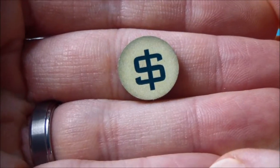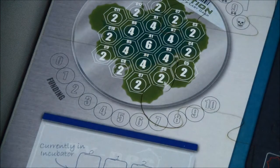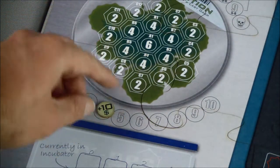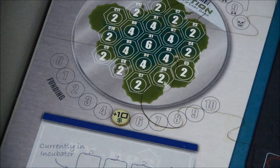Next we have our funding token and we'll start with it on this side because we're going to start the game with fifteen dollars in funding. So we have it on the ten side and put it on the five space to give us fifteen dollars to start out.